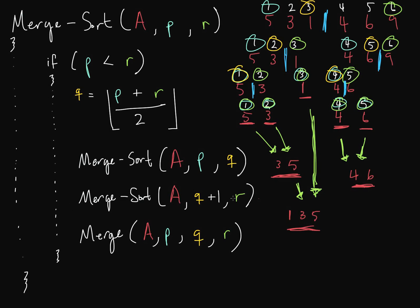Now the right side of the original right half: Q plus 1, which is element 9 at index 6. P equals R, so 9 is not less than 6 — it's sorted. We return from that call. Now we merge 4, 6 with 9. Is 4 less than 9? Yes. Is 6 less than 9? Yes. Nothing remains, so we bring 9 down. This side is sorted: 4, 6, 9.